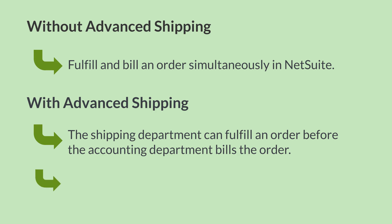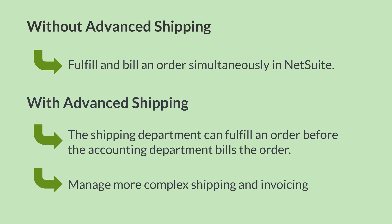Advanced Shipping also lets you manage more complex shipping and invoicing situations. For example, you can fulfill partial orders and invoice partial orders. You can also fulfill multiple orders at a time, as long as none of those orders have partial fulfillments.